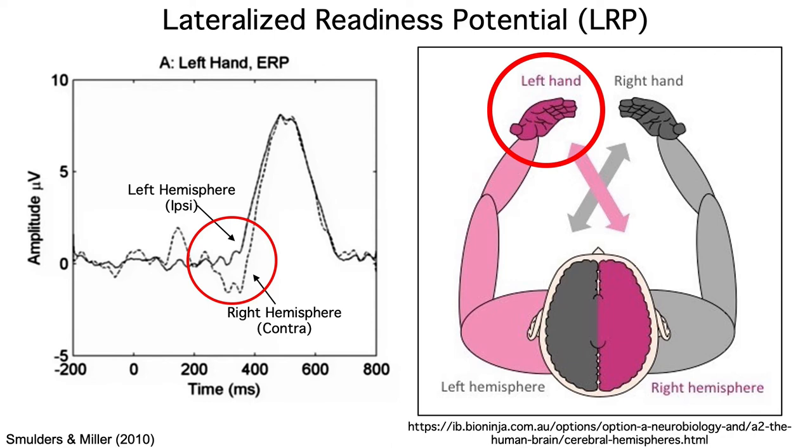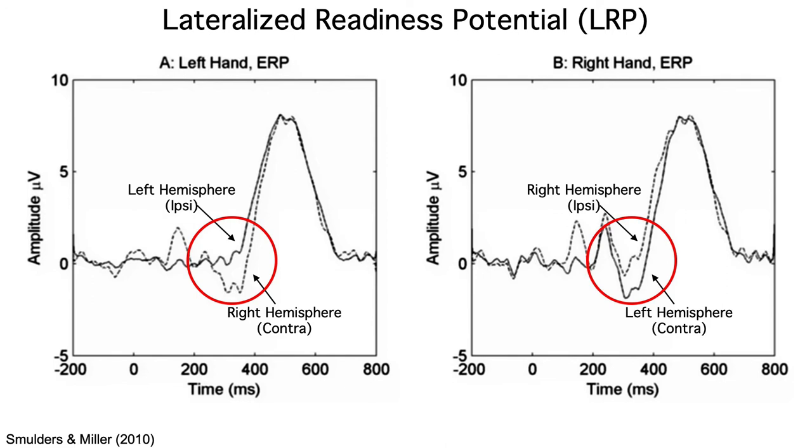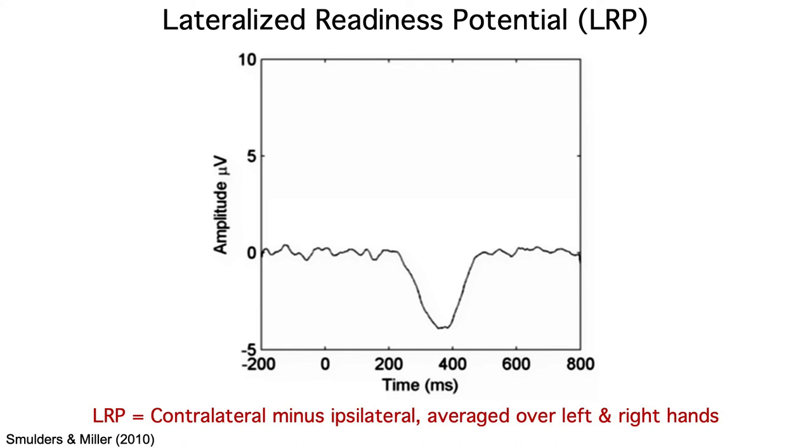So, when you prepare to make a left-hand response, you get a negative going voltage over the right hemisphere motor cortex. And you get the same negative going voltage over the left hemisphere when you prepare to make a right-hand response. We can collapse the data into a contralateral waveform and an ipsilateral waveform, and then make a contra minus ipsi difference wave that subtracts away all the non-lateralized activity and isolates the LRP.